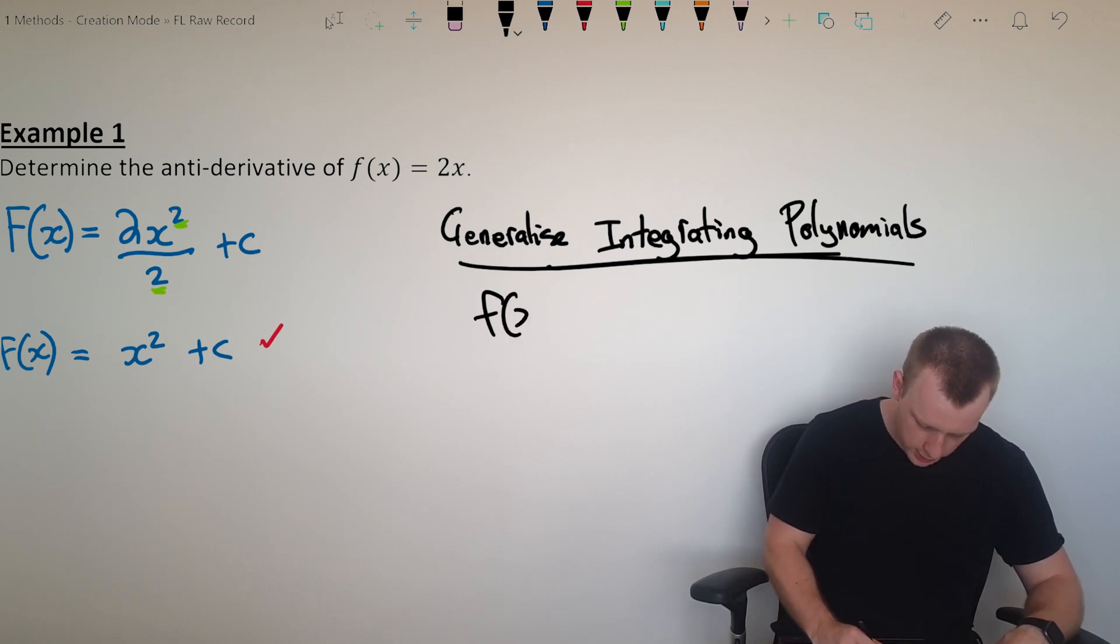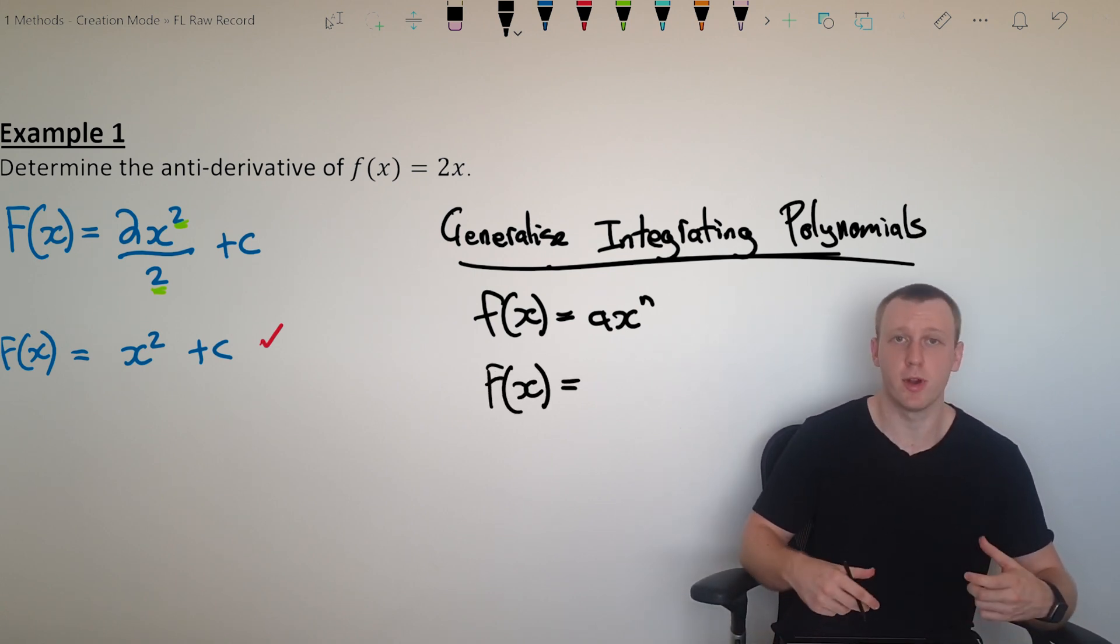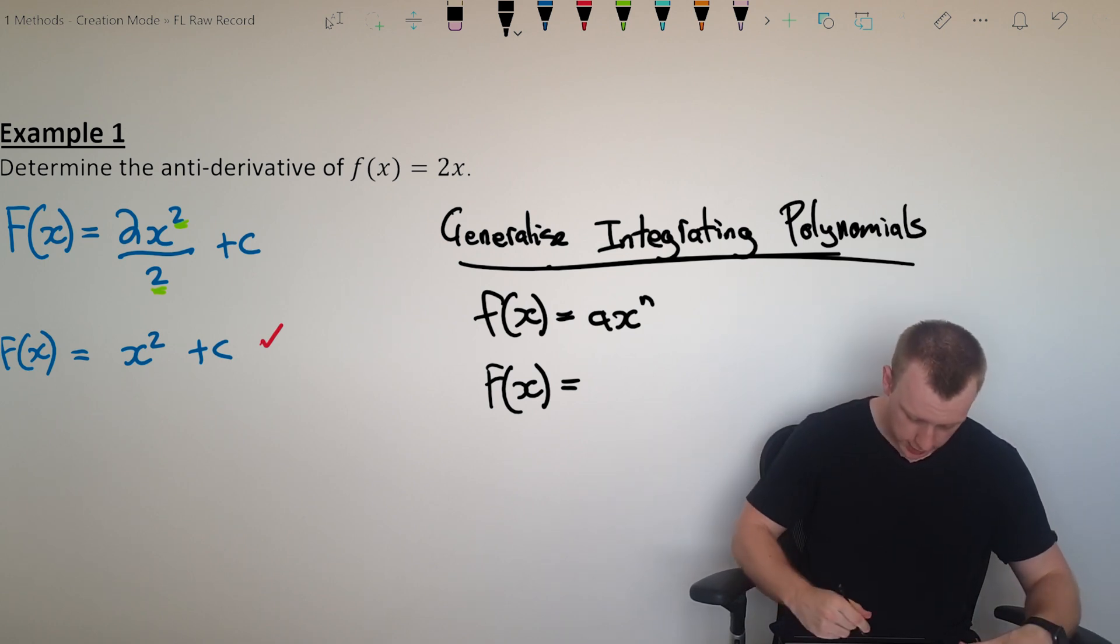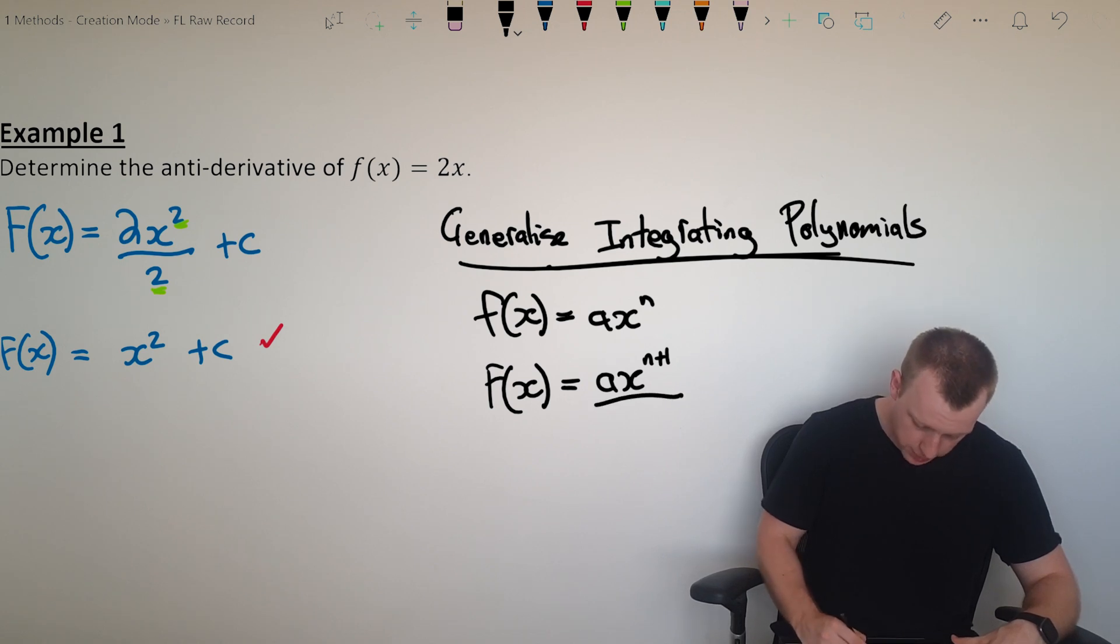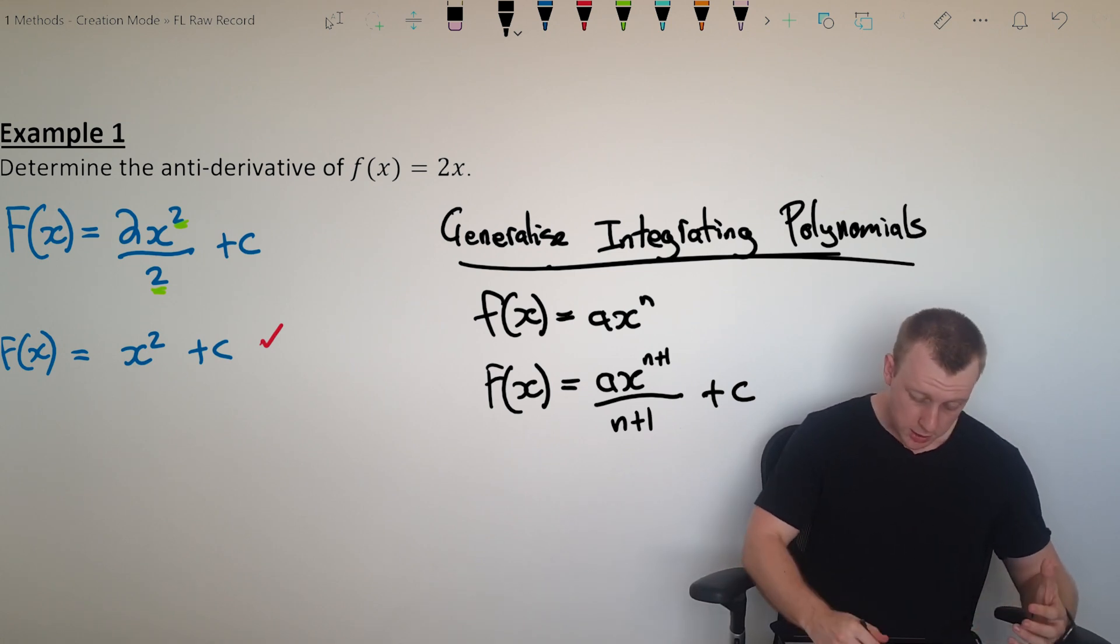So let's say we've got a function ax to the power of n, and you want to integrate said function. All right, these are just parameters, the little tweaks and dials. You've got ax to the power of n plus one, because you add one to the power, divided by n plus one, plus c. Let's interpret this.